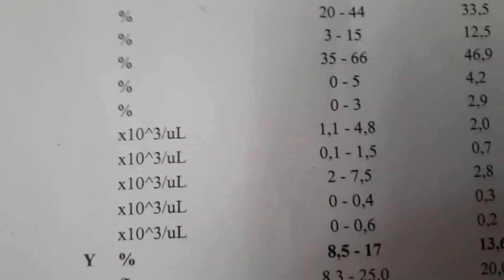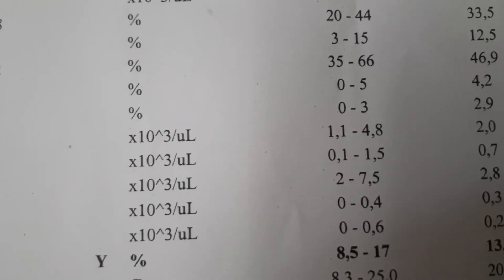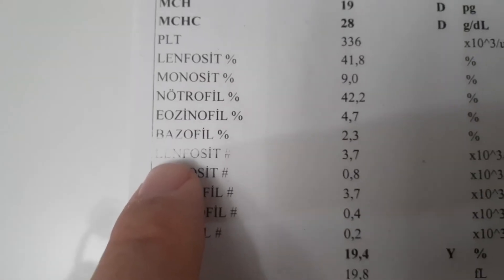In the hemogram report, there may be an asterisk next to values like lymphocyte, monocyte, neutrophil, eosinophil, and basophil. An asterisk indicates the absolute number of these cells, not the percentage. The percentage and absolute number essentially mean the same thing — the reasons that increase or decrease them are the same as the situations mentioned above.